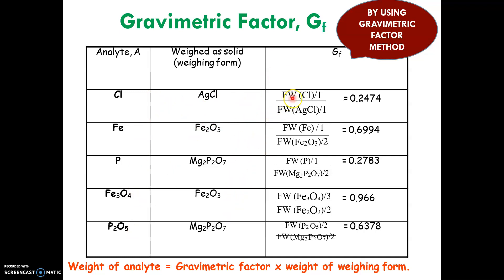For silver chloride, the analyte is chloride, so: molar mass of chloride divided by molar mass of silver chloride, divided by one since they each have one mole. For iron oxide (Fe₂O₃), the analyte is iron and the precipitate is Fe₂O₃. Since there are two moles of iron in Fe₂O₃, you divide by two, or equivalently multiply by two on the numerator, to get the same answer.